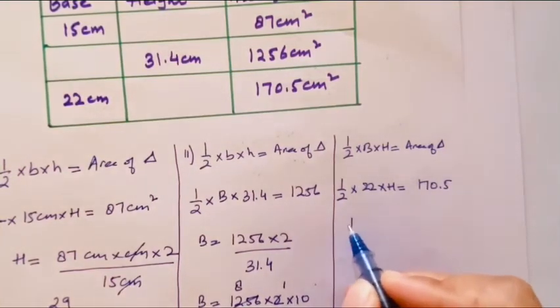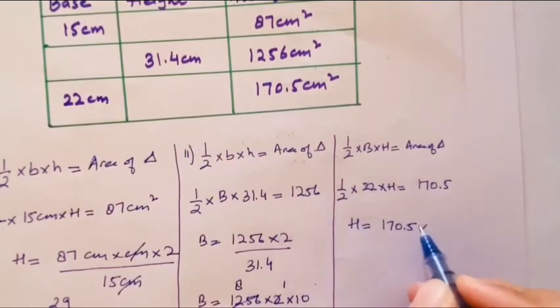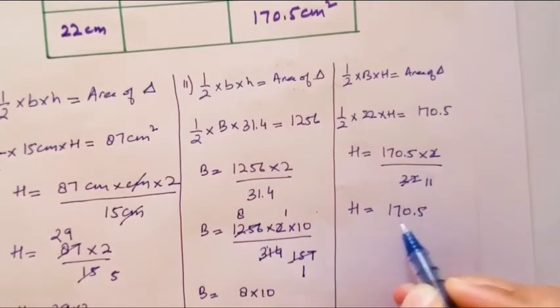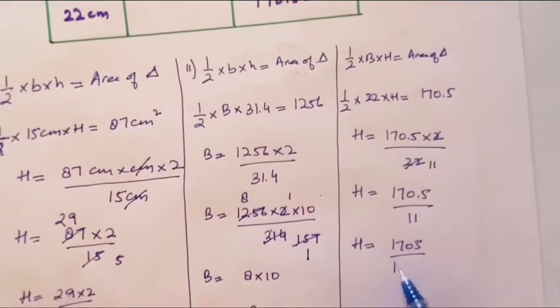So 170.5, 2 will multiply on this side, and 22 will be divided. Now 2, 22 cancel, 2, 1 to 2, 2, 11 to 22. So H equals 170.5 upon 11. Now remove the decimal point. The point is above, so one zero will come below. H equals to 1705 upon 110.